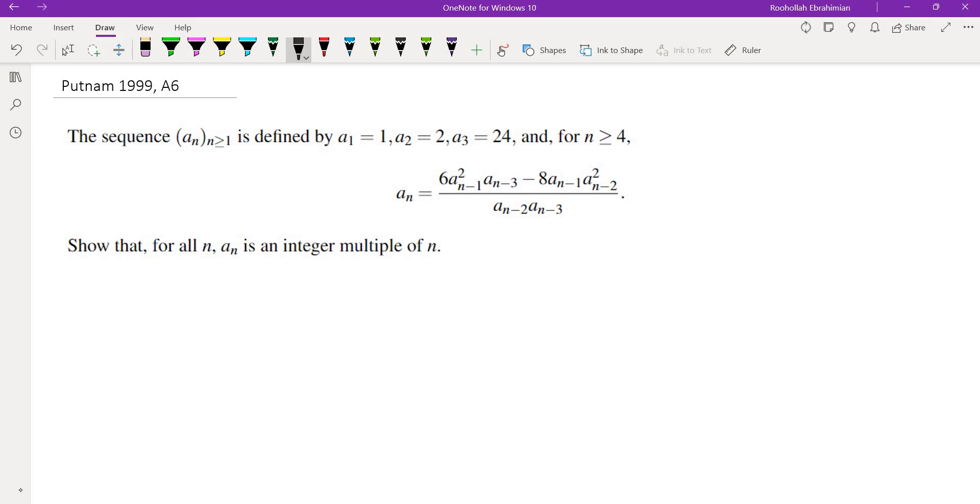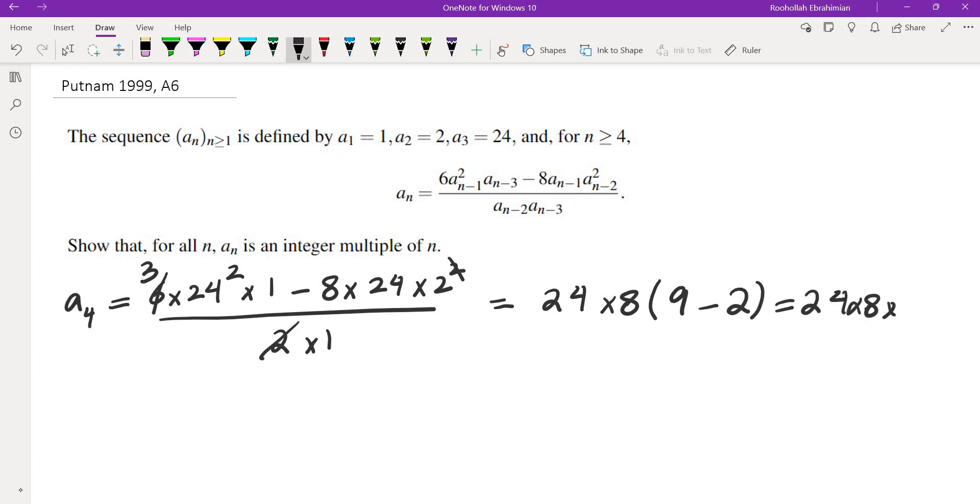We're going to find the terms of the sequence. Let's find A4. A4 is 6 times the previous term squared, which is 24 squared times 1, minus 8 times 24 times 2 squared, divided by 2 times 1. So I plugged in n equals 4 and that's what I got. Simplifying, we get 3 here, and one of these 2s goes away. Both terms have 24 in common, and there's also an 8 that we can factor. So from the first term, we factor 24 and 8, leaving us with 9. From the second term, we factor 24 and 8, leaving us with 2. So we get 24 times 8 times 7.